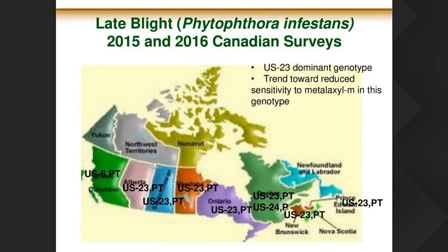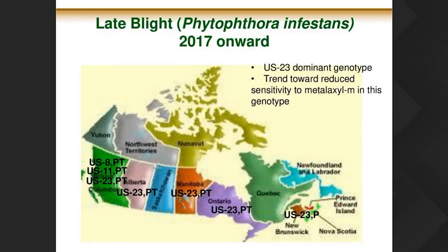A few years ago, we started to see US-23 really dominating the landscape on both potatoes and tomatoes across the country, except for BC, where we were still finding US-8 and other strains. Fast forward to 2017 onward — we're still determining strain work from 2019 and 2020 — but for the most part US-23 has become our dominant genotype across the country, except for BC, where US-8, US-11, and US-23 are all fairly common. So it's a largely homogenous situation nationally with US-23 dominating, but much more diversity in BC.